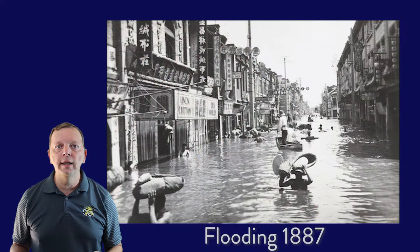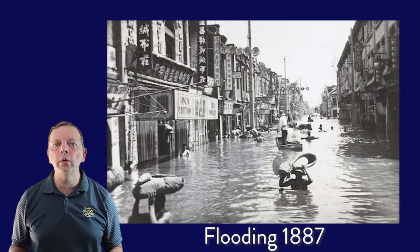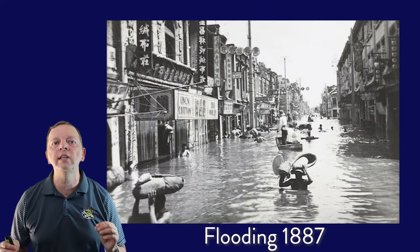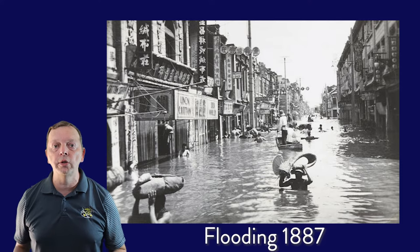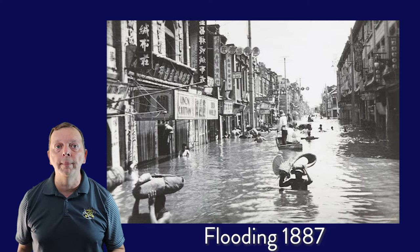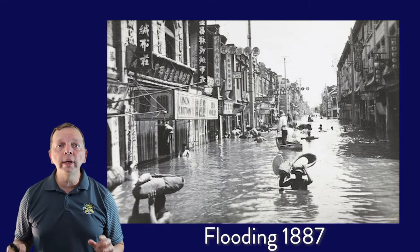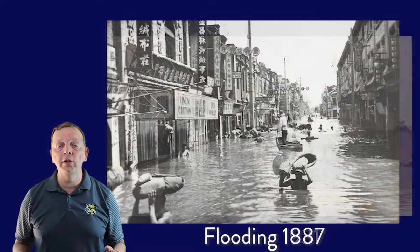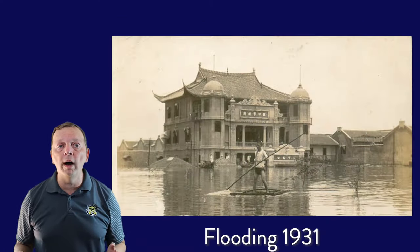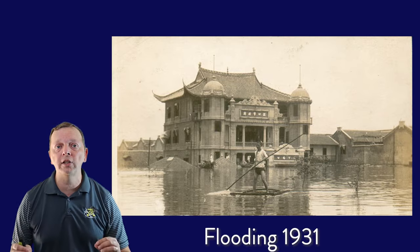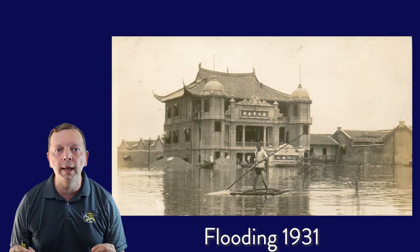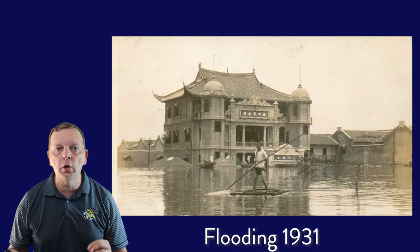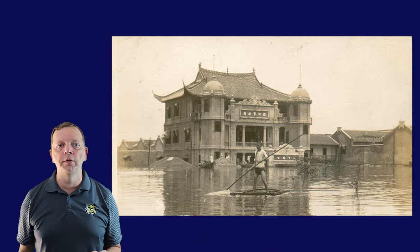The floods of 1887 killed as many as 2 million people and is considered the second most devastating natural disaster in history. These were only outdone by the floods of 1931, with some estimates placing the death toll at 4 million people.